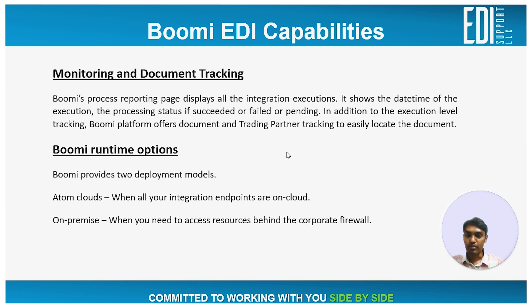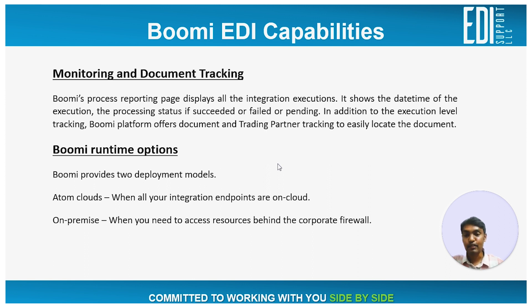Finally, Boomi runtime options. Boomi provides two deployment models, which is very convenient. One is the atom cloud — the atom cloud runtime is very helpful if all your integration endpoints are on the cloud. An on-premises deployment option is also available when the integration has to access resources behind the corporate firewall. At EDI Support, we understand your integration landscape and suggest the right deployment model, educating customers on the pros and cons of each option to help them take an informed decision.